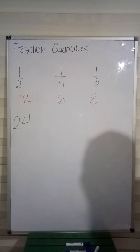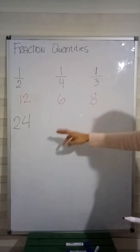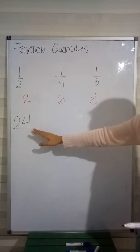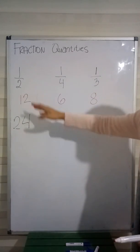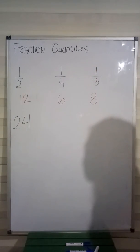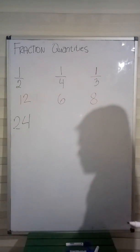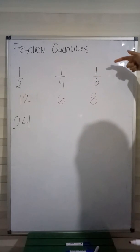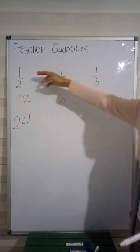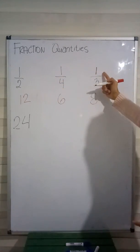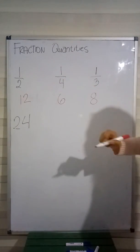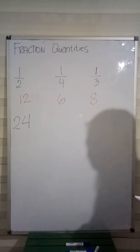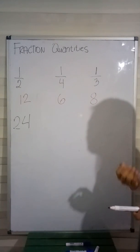Simple as that. All you have to remember is you're just going to divide the given number by the denominator, whatever the denominator is. Now, it's easy because we only have 1 as our numerator — we have 1 here, 1, and 1. But what if our numerator is not 1? How do we deal with that?